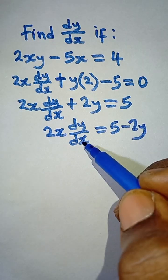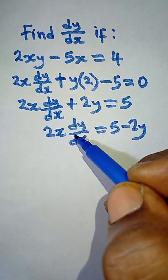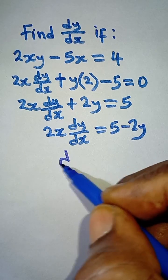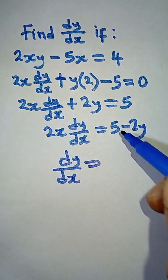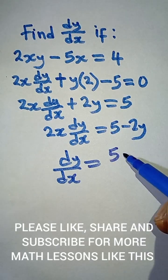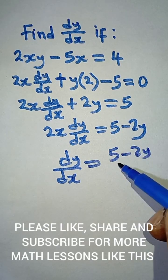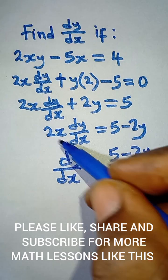Now we are looking for dy/dx, so we divide both sides by 2x. So I'm left with dy/dx is equal to what I have here, which is 5 minus 2y, all divided by 2x.